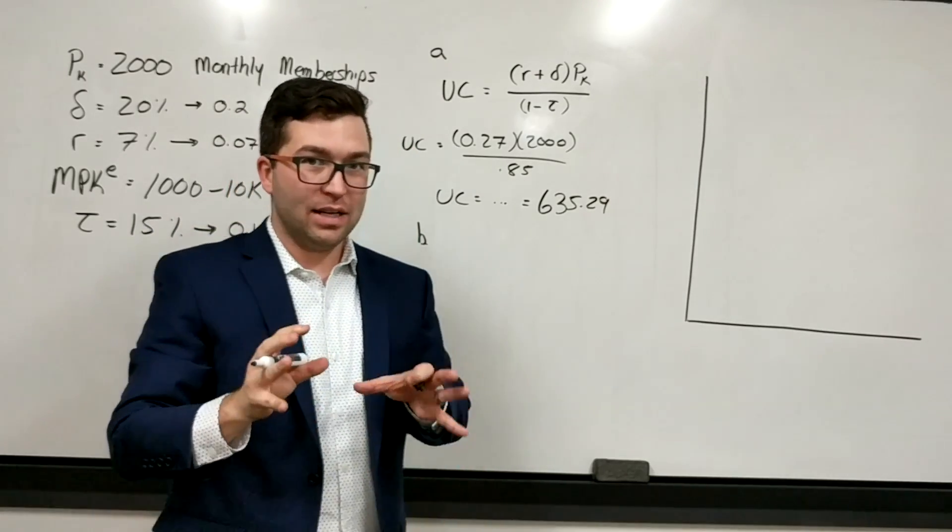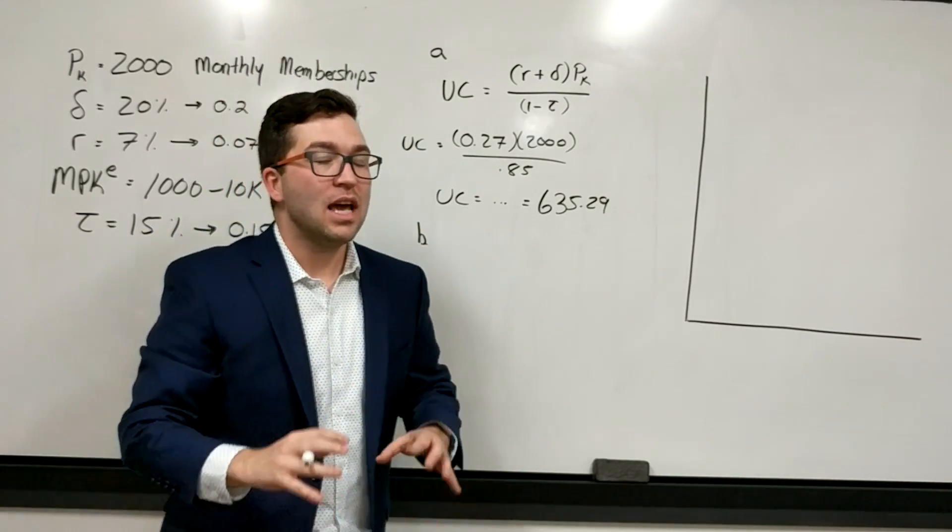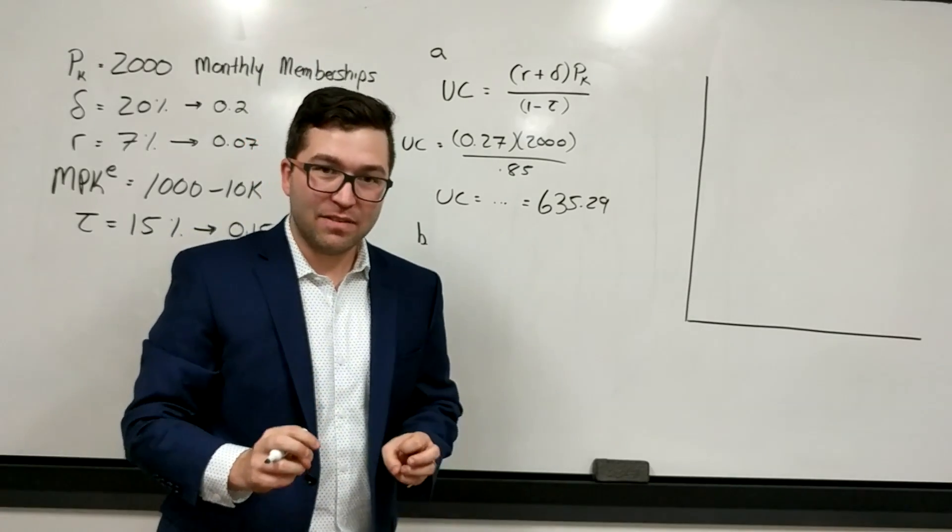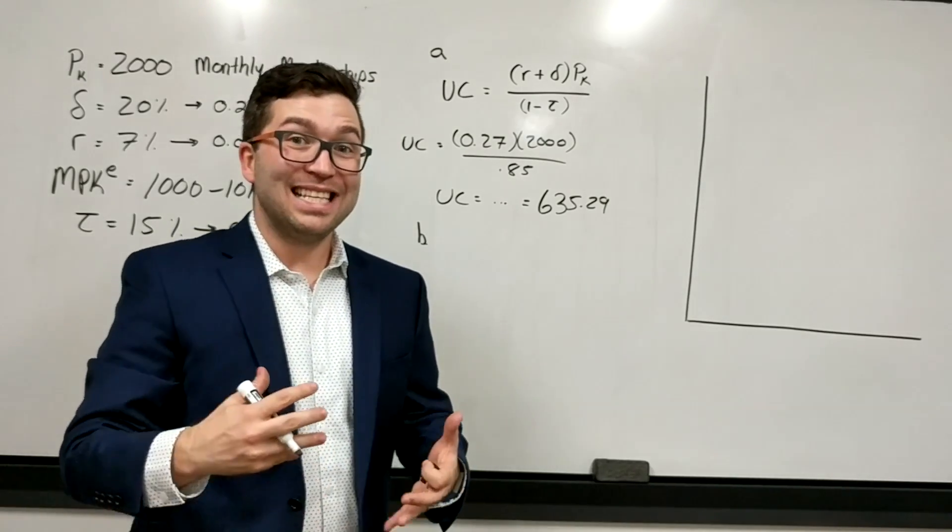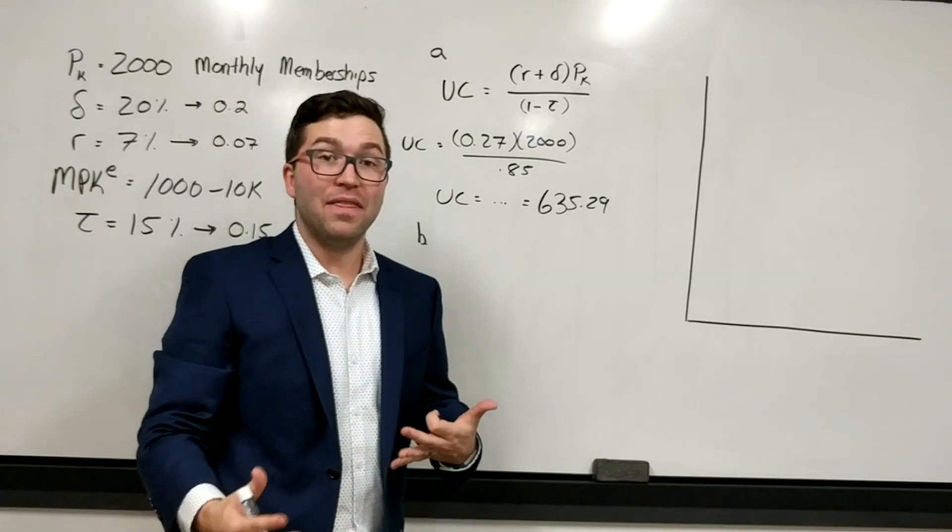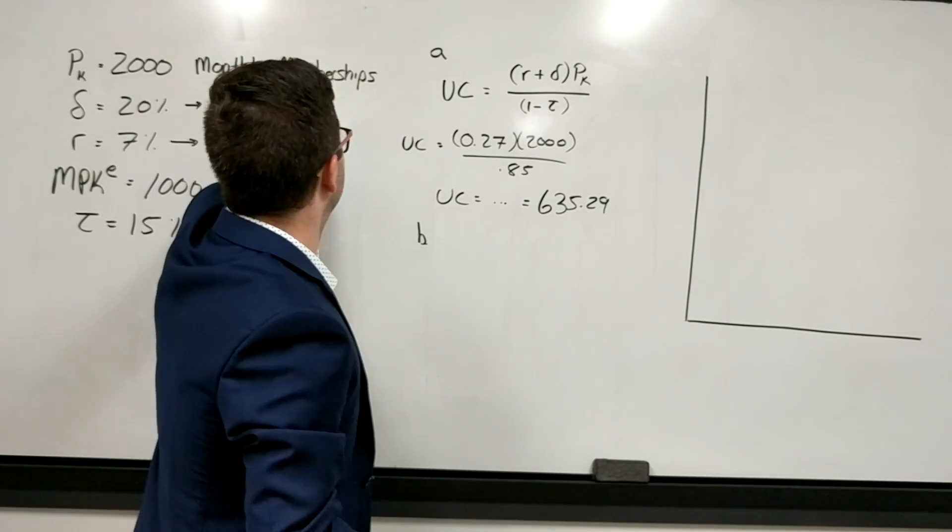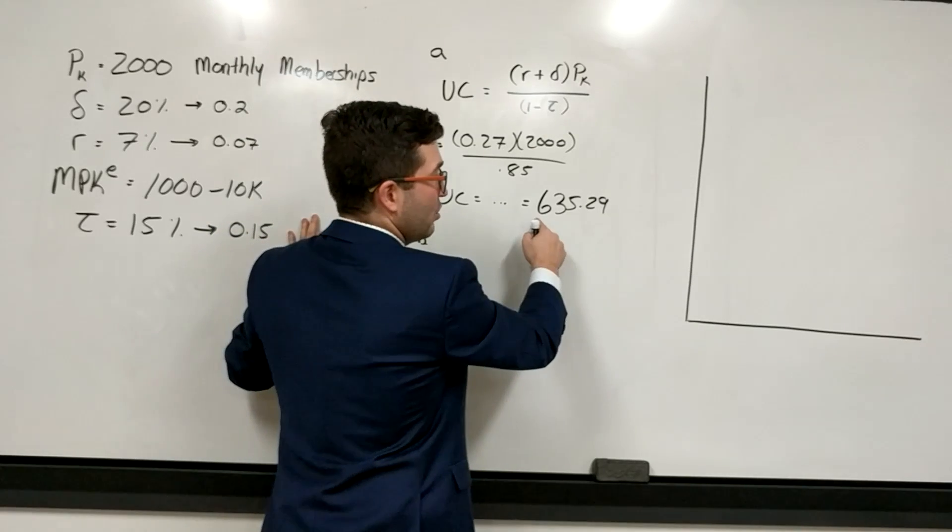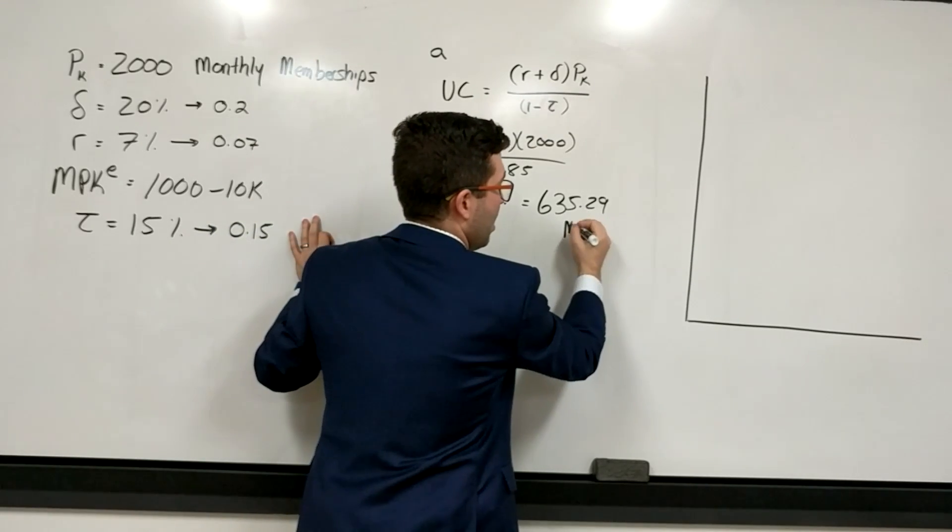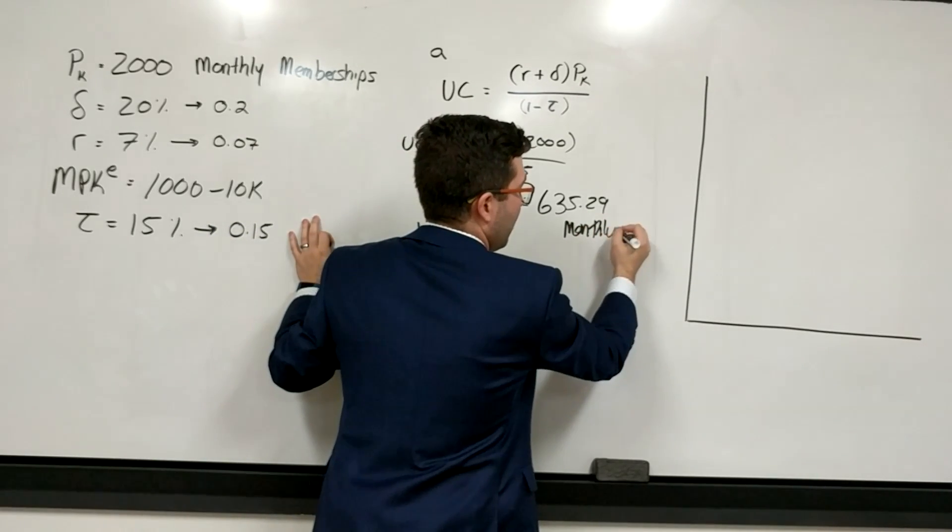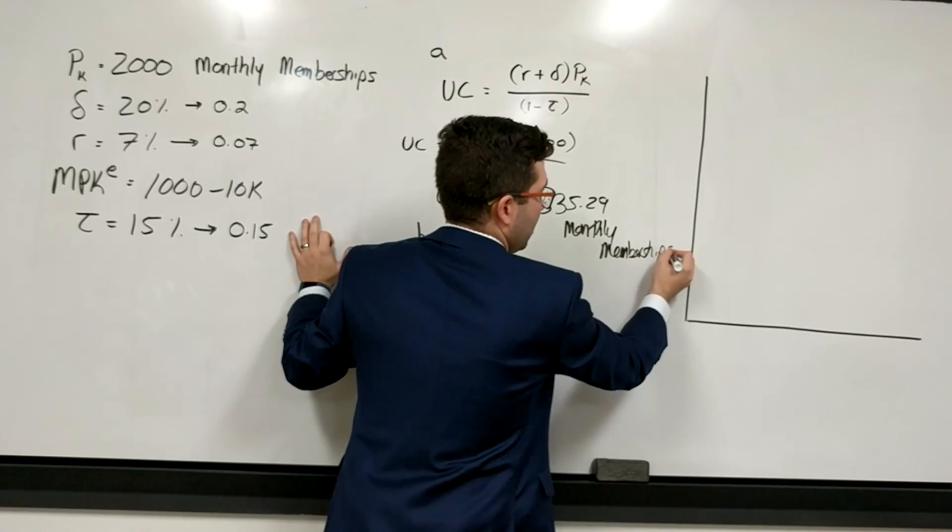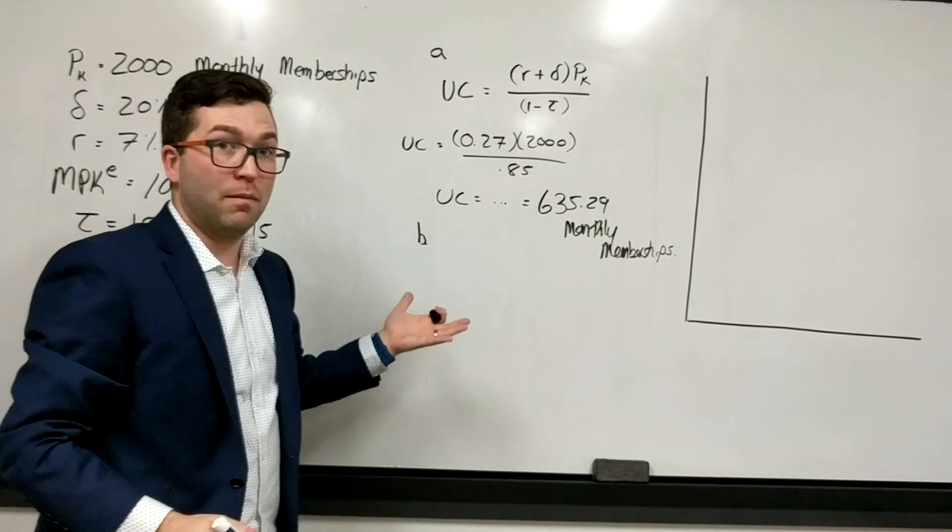635.29. An important thing here, and you will lose credit on an exam or a problem set if you're asked, this is what is the user cost expressed in? It's the cost of capital, so it's not dollars, it's in your unit of output. And in this case, our unit of output is monthly memberships. That's what we're trying to measure everything in, so it's 635.29 monthly memberships, and that would be your answer for part A.